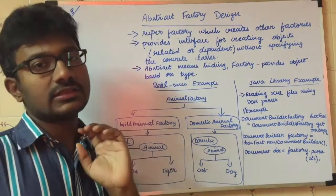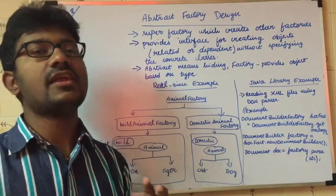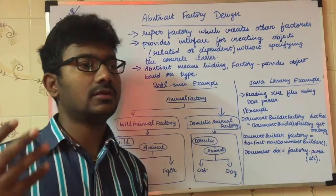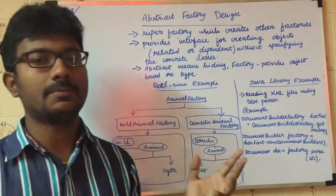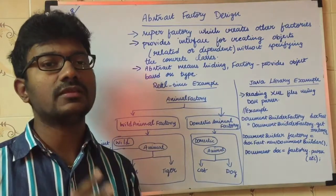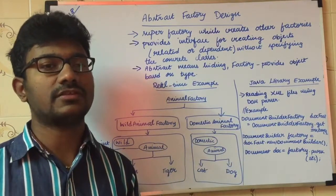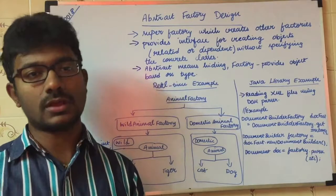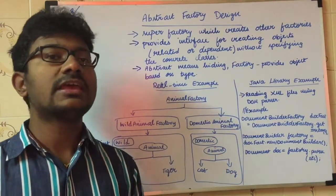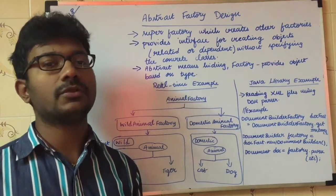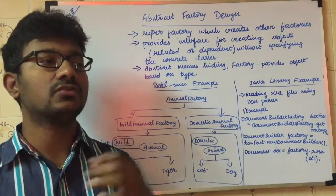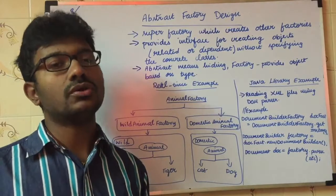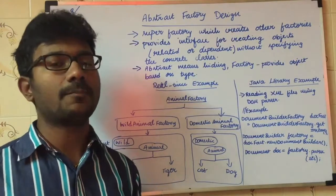The Abstract Factory Design Pattern is used to manage factories. For example, consider a soap manufacturing company that manufactures products from raw materials. The actual soap is manufactured by a company, and the soap is given a wrapper. The top-most company manages both the wrapper and the soap manufacturing.